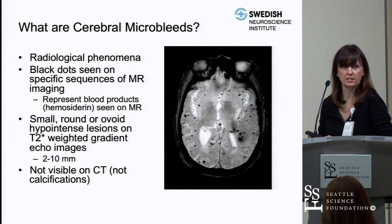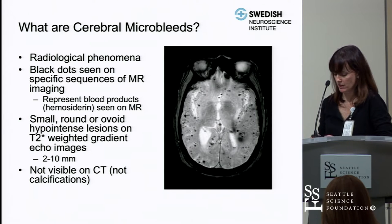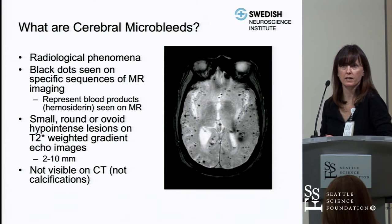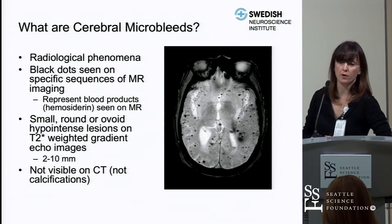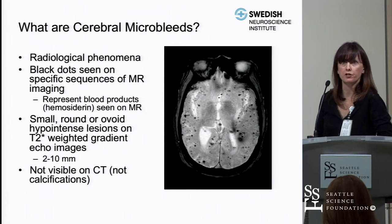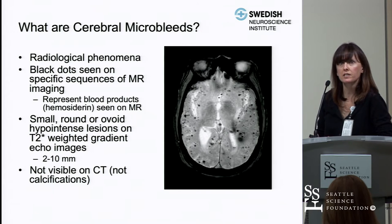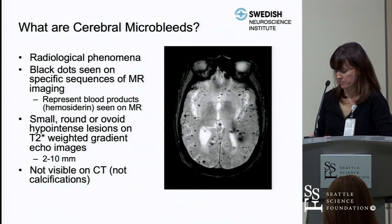When gradient echo images and later susceptibility images were used in radiology, we realized that these are actually very prevalent, especially in the aging population. They are black dots seen on gradient echo and susceptibility-weighted images, and they represent blood products.